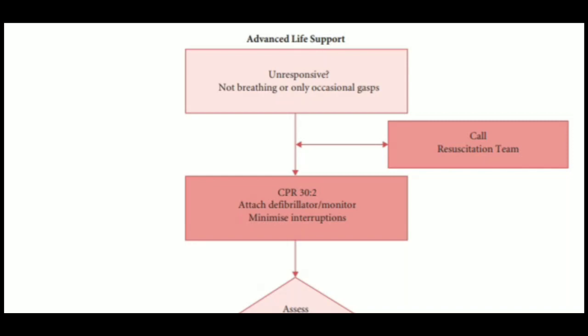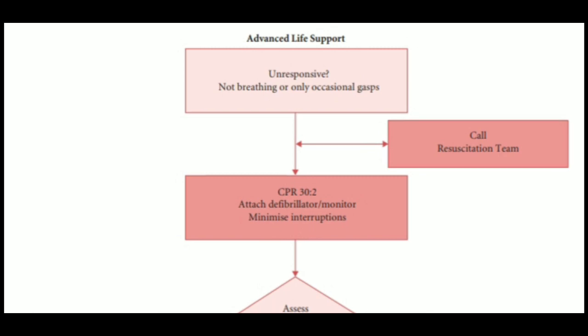This video is about the algorithm of Advanced Life Support. This algorithm is very important — not only in obstetric gynecology but also in any field — when a patient is unresponsive in the hospital. We need to follow this algorithm. The basic first step is when a patient is unresponsive, meaning the patient is not breathing or only having occasional gasps, we have to call for help and call the resuscitation team.